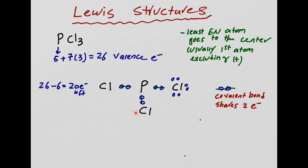Each Cl gets six more electrons added to it. Now each Cl has eight electrons total — one, two, three, four, five, six, seven, eight — so each of my three Cl atoms is happy. I put six electrons on each of the three Cl atoms: 6 times 3 is 18. So I put down 18 electrons and all surrounding atoms are happy.